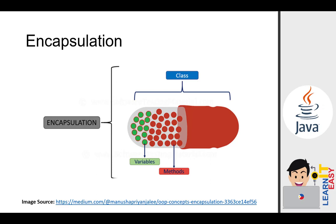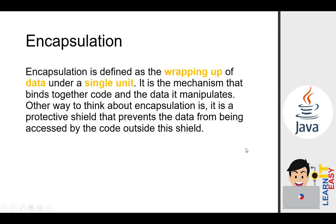The ability to protect what is inside this capsule is the same as the concept of encapsulation in object-oriented programming. Our class is like the whole capsule — our variables or data members, including the methods we created, are placed inside a protective jacket, and that jacket is what we call encapsulation. Hopefully you got the general idea of our lesson for today.